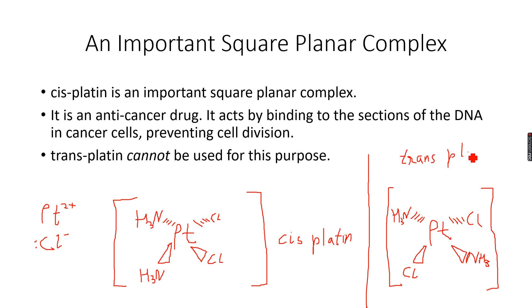Cisplatin and transplatin. As I've written over here, cisplatin is an important square planar complex. You will get this question many times, why is it used. It is used as an anti-cancer drug, it acts by binding to the sections of the DNA in cancer cells, preventing cell division.